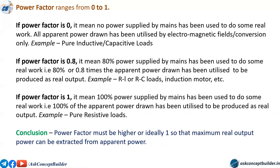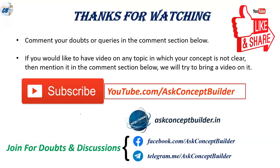Power factor must be higher, or ideally one, so that the maximum real output can be extracted from the apparent power — meaning the maximum real power output can be delivered to the load from the supply mains.